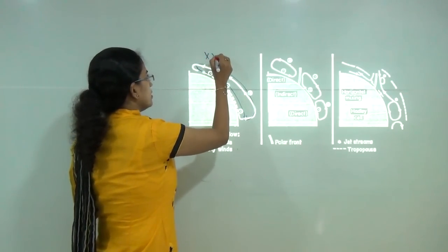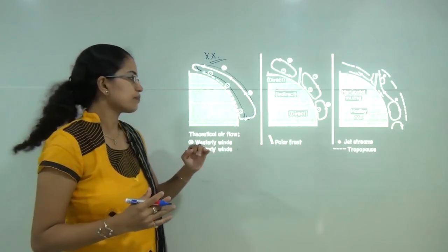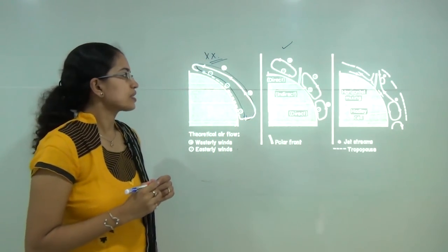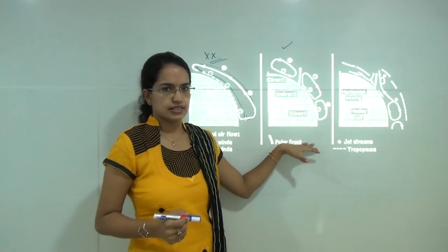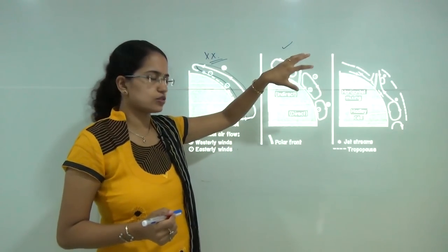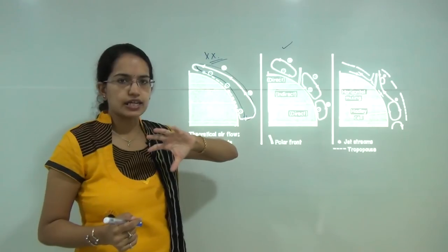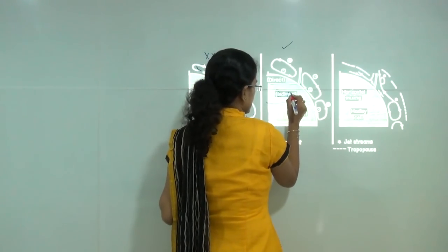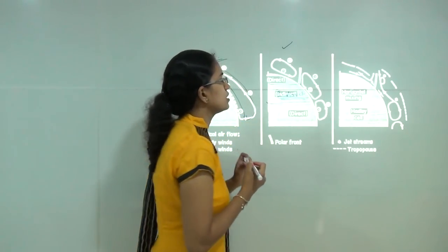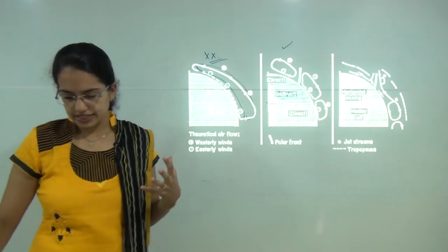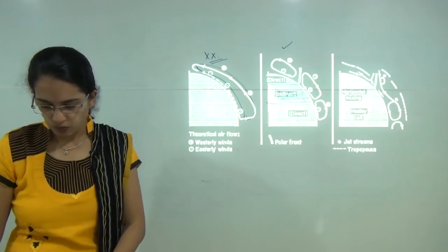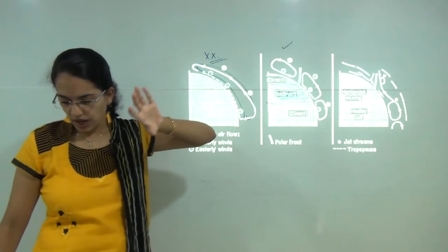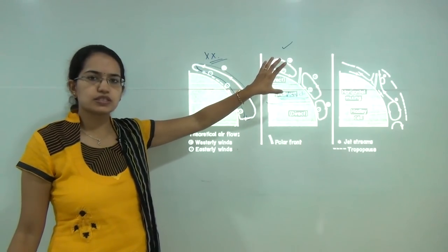The next model propounded was the Hadley model, which talked about a three-cell system. The two cells towards the poles and the equator form the direct cells, while the mid-latitude region forms the indirect cell. In the tricellular model, thermal contraction occurs towards the pole, causing contraction of air towards the pole.